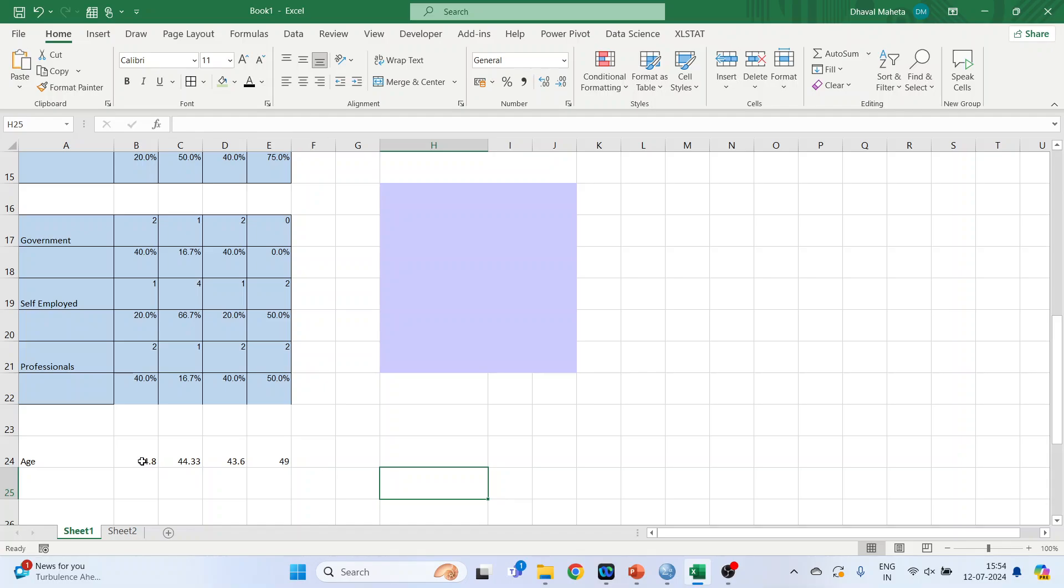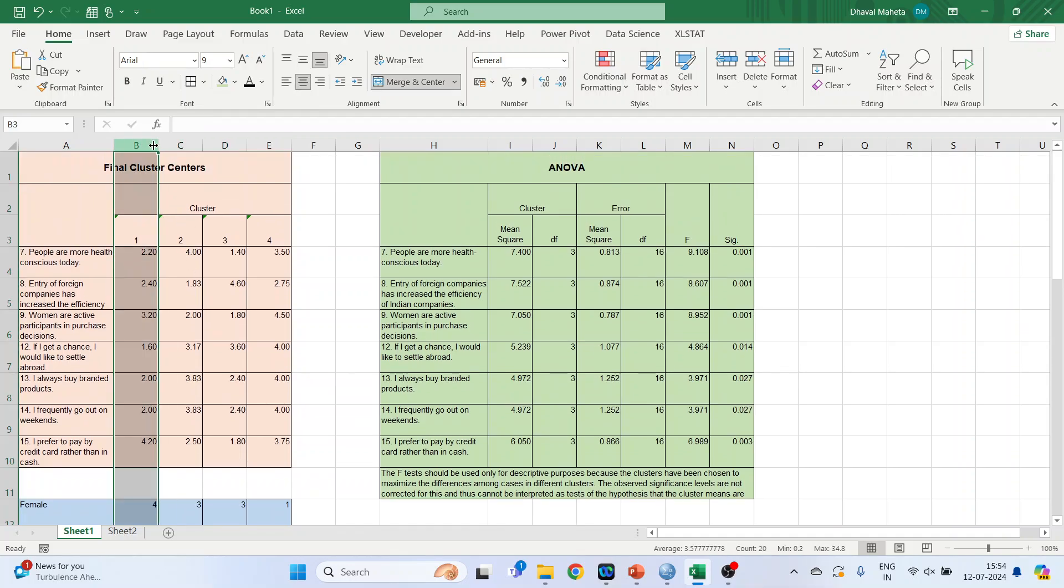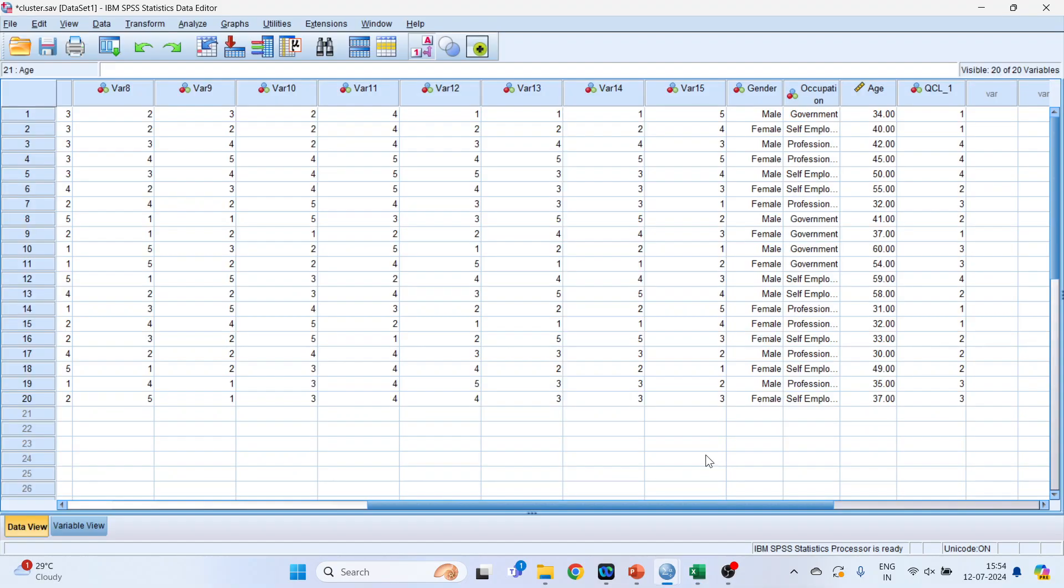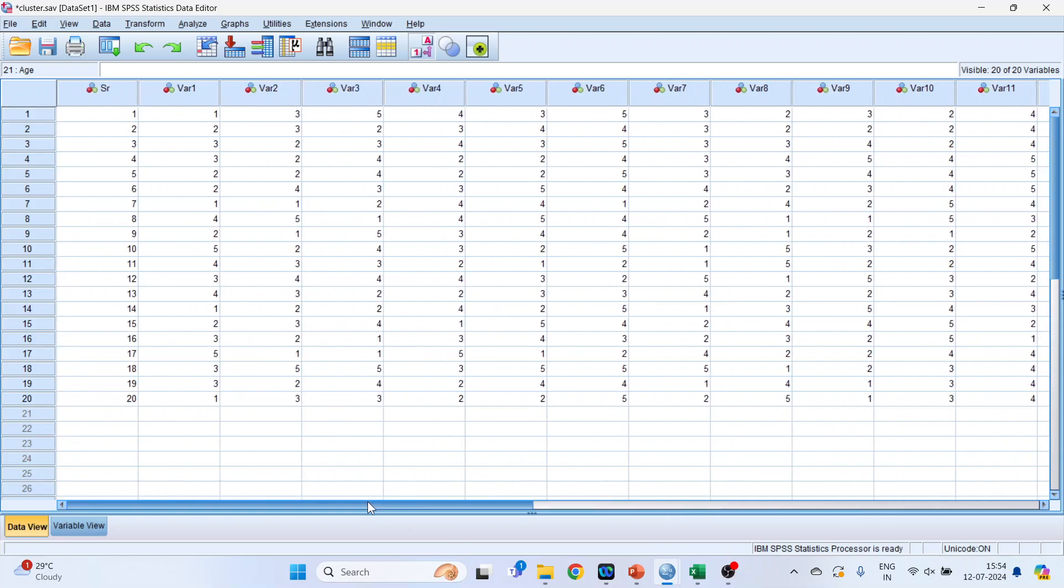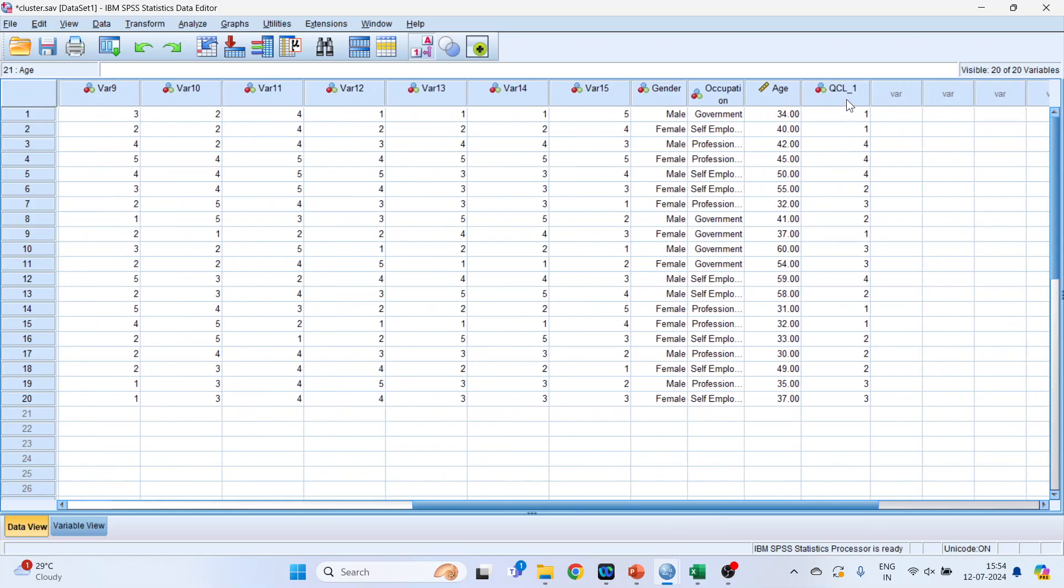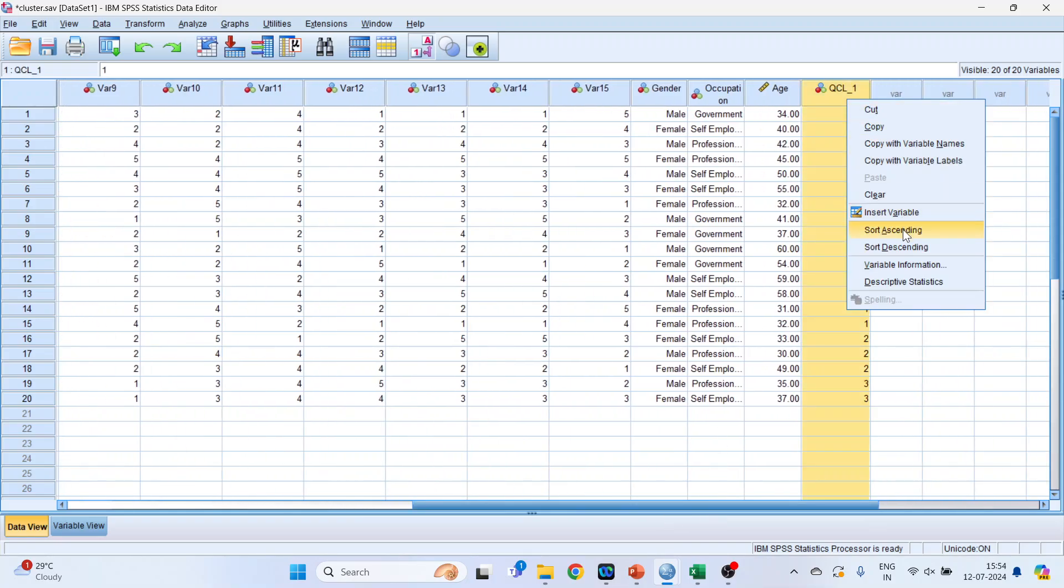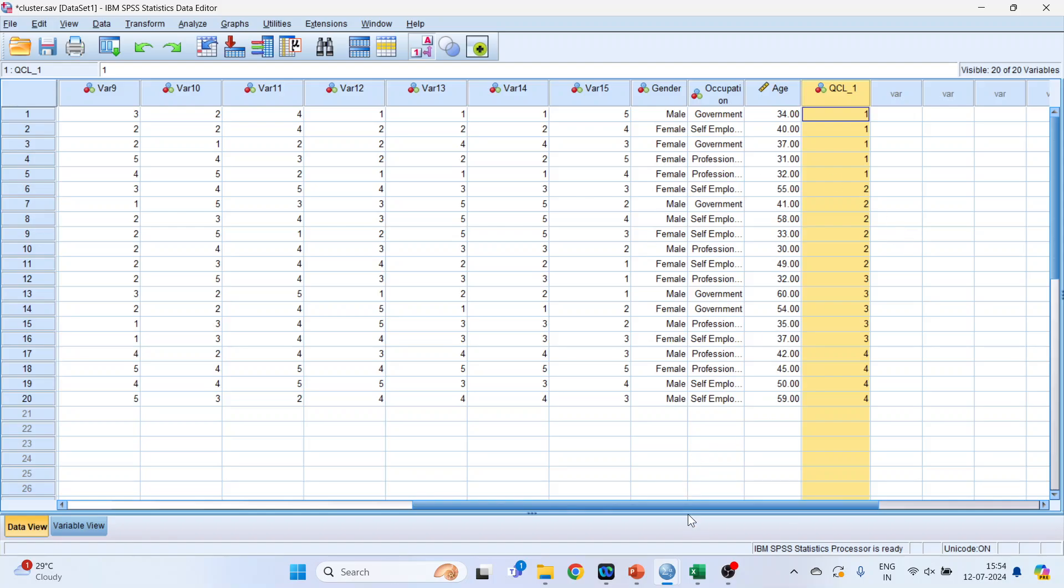So you can see the differences, difference in the age according to the cluster. Cluster two, three, four. You can also arrange your cases according to the clusters. Just click here, right click, sort ascending. So all the cases will be arranged according to the cluster membership.